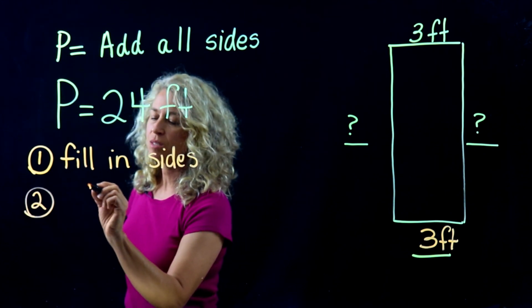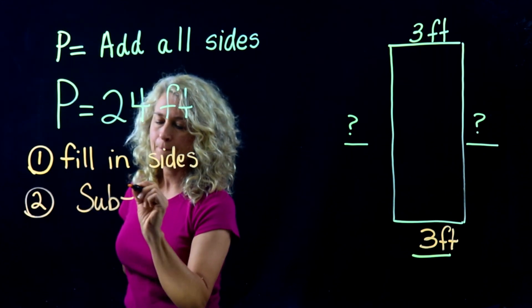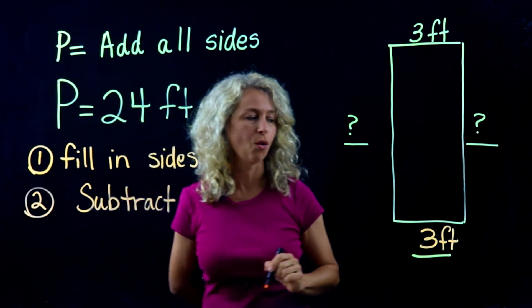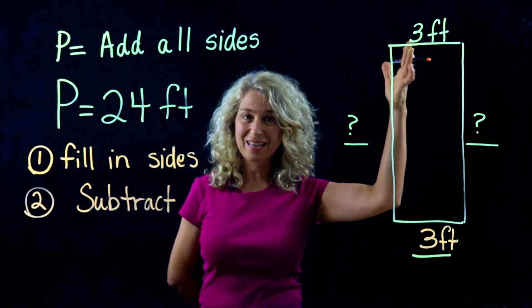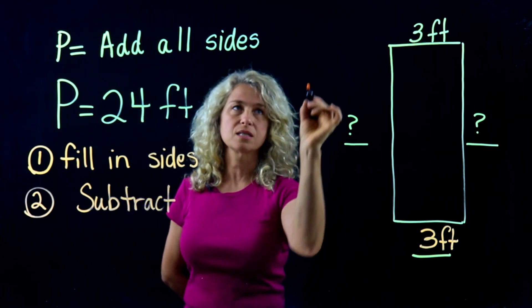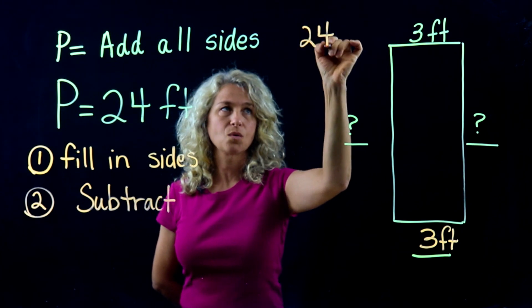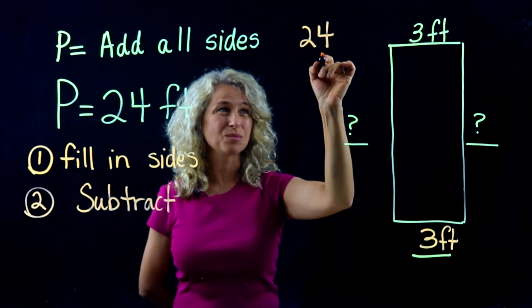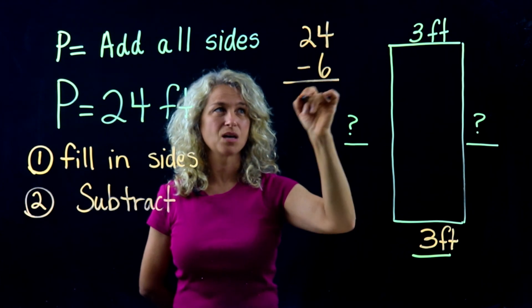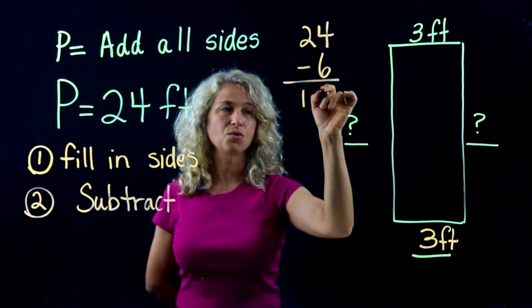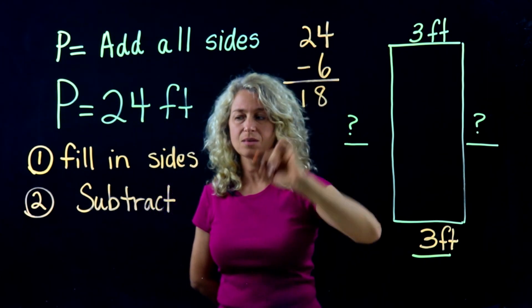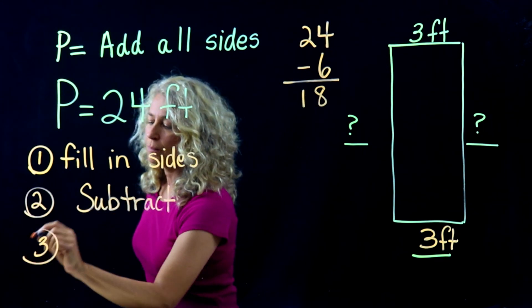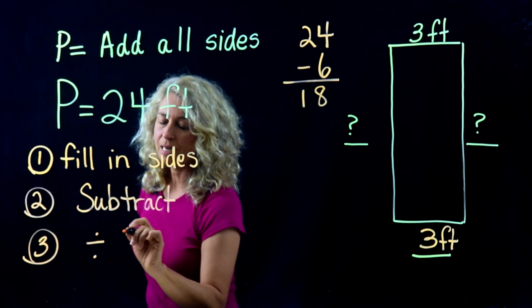So 3 plus 3 is 6. We take our total perimeter of 24 and subtract 6. When you subtract, you get 18.